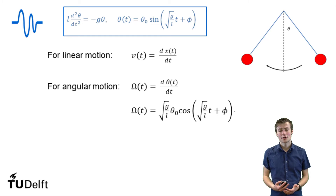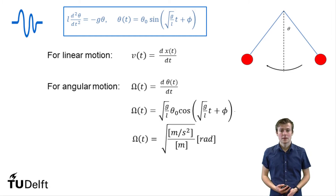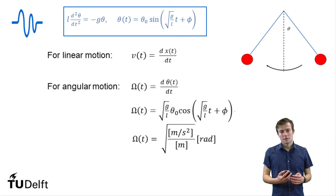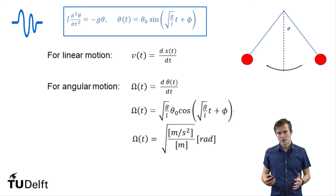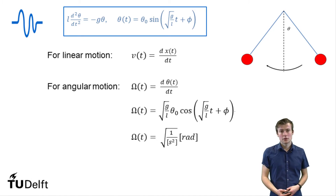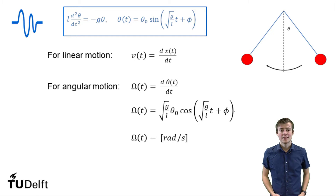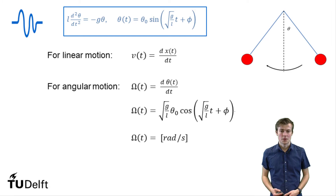If we want to look at what are the units for our angular velocity, we can fill in all the units for our parameters. g is in meters per second squared, l is in meters, and theta zero is in radians. Note that the cosine is just a number between negative one and one, so it does not have a unit. We can work out the fraction and obtain that the unit is the square root of one over s squared times radians, which works out to be radians per second. This makes sense because the angular velocity tells us how many radians we pass by in one second.